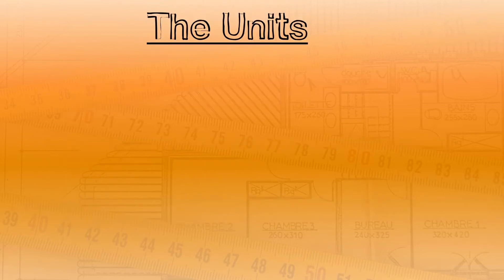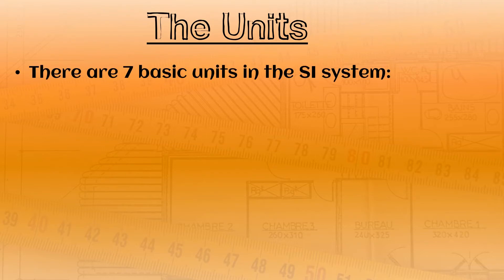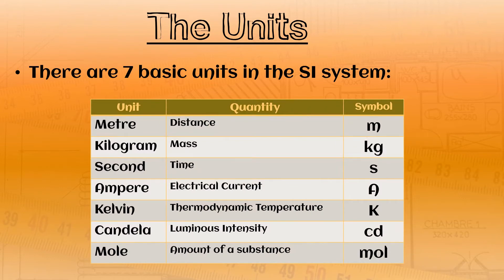So let's have a look at the units. There are seven basic units in the SI system and here they all are. There is the meter, which we use to measure distance, the kilogram, which we use to measure mass, the second for time, the ampere for electrical current, Kelvin for thermodynamic temperature, candela for luminous intensity, and the mole for the amount of a substance. With those units, we can calculate just about everything that we need to understand the world.